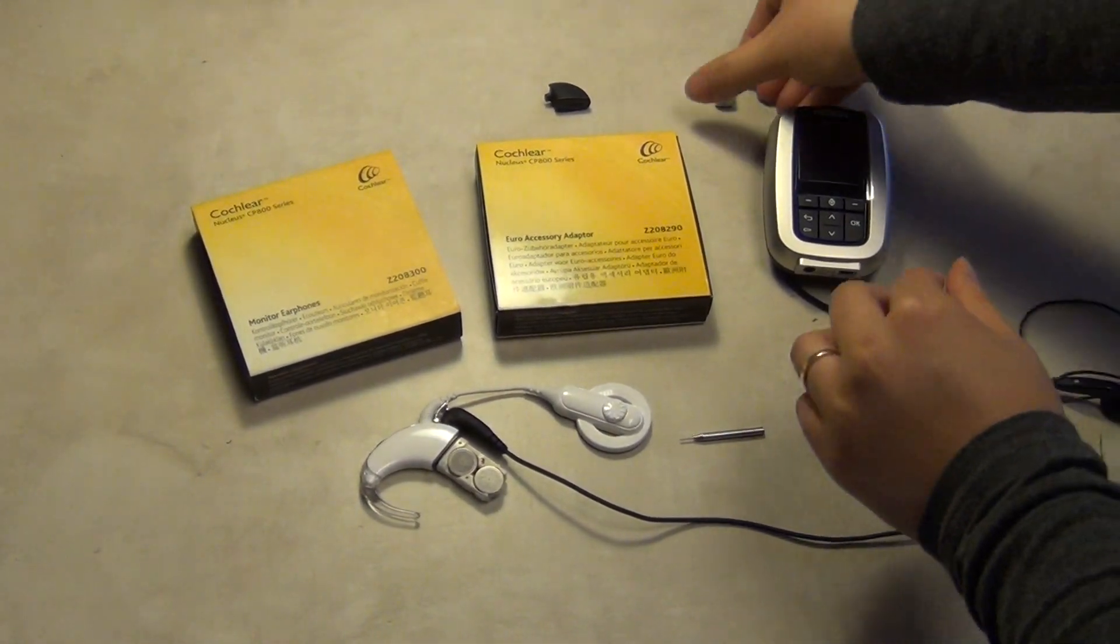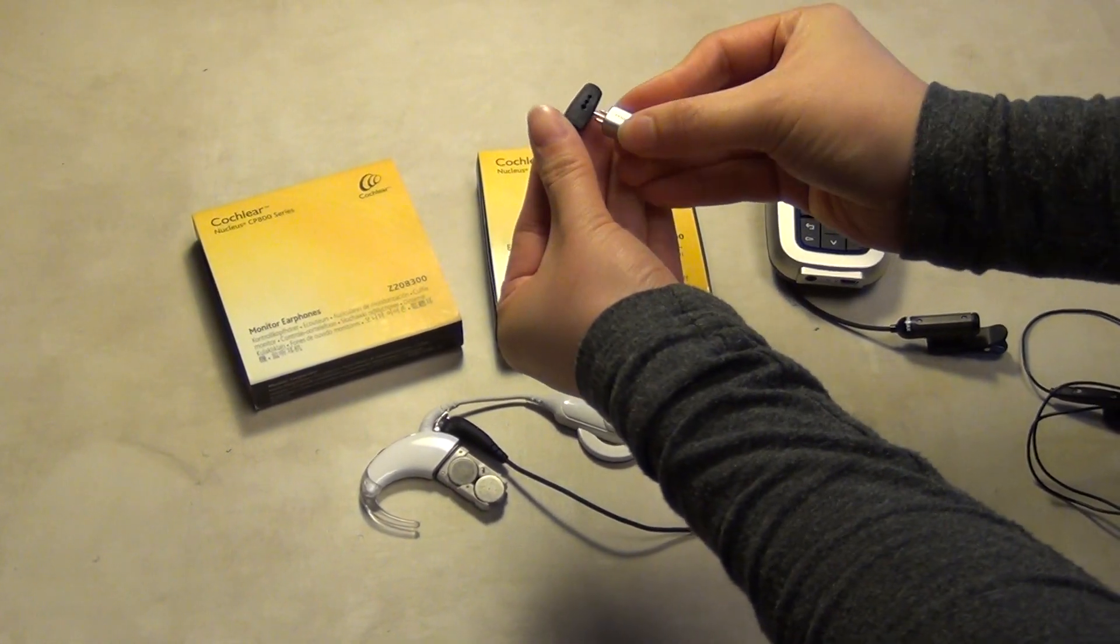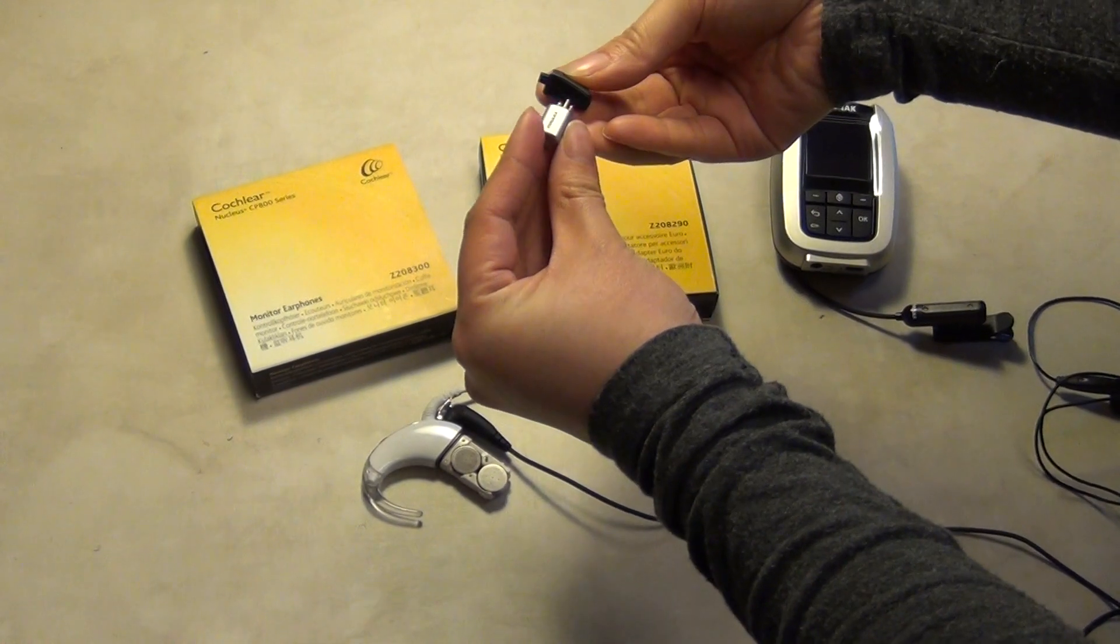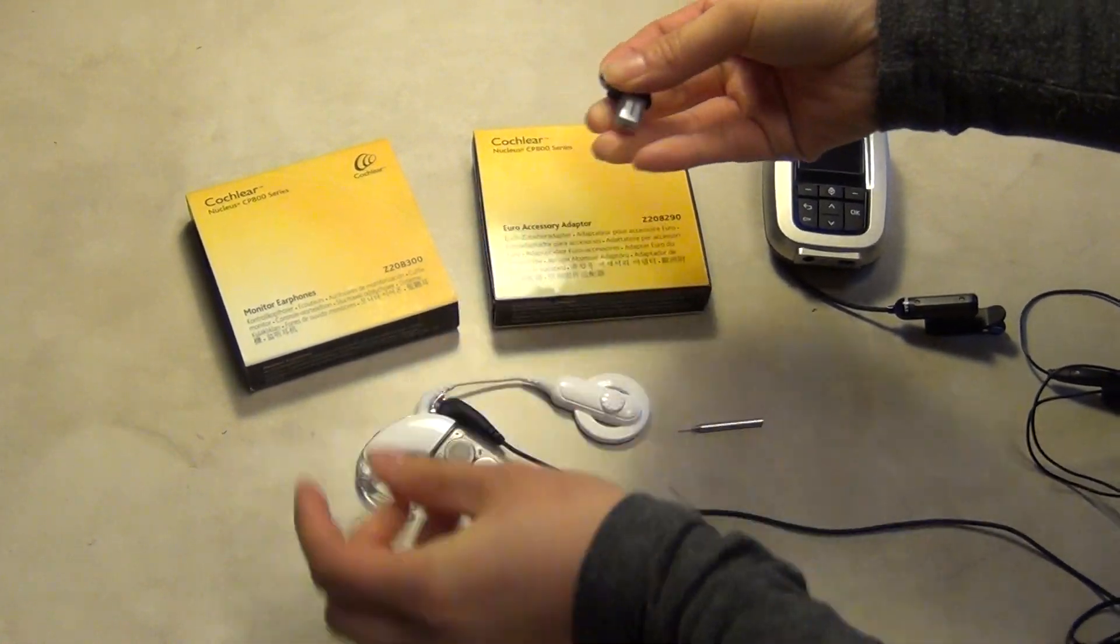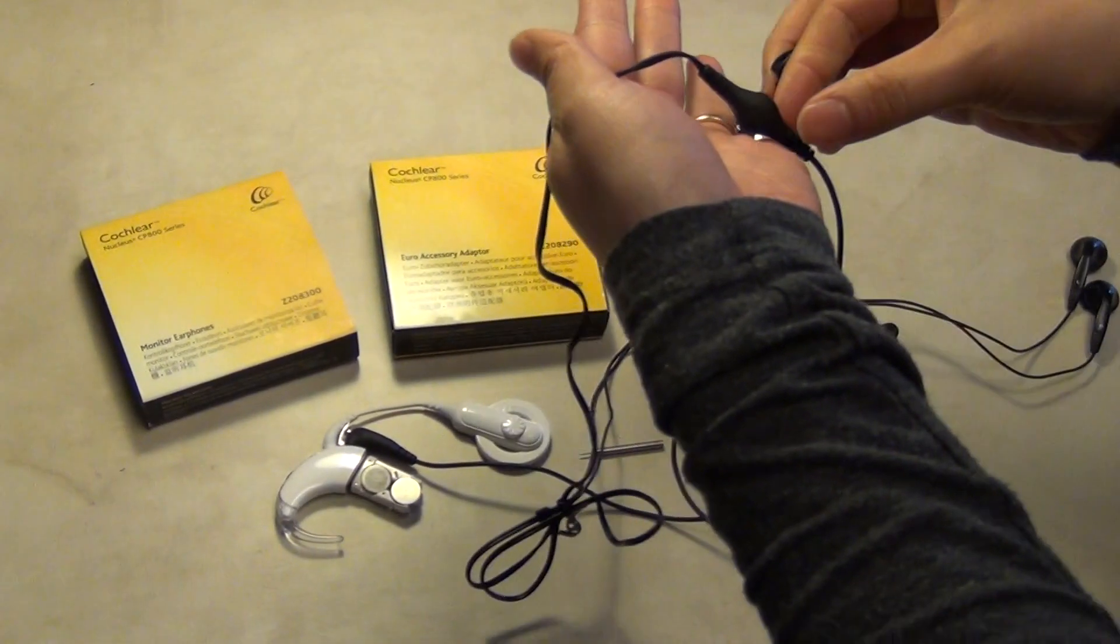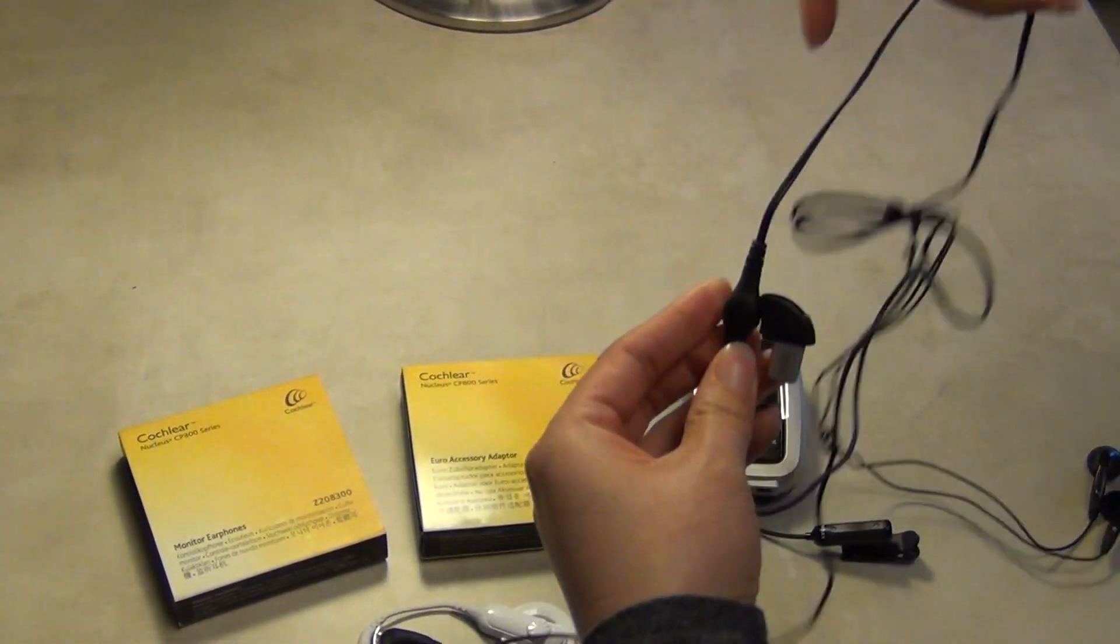Now plug your FM receiver into the adapter. Align the biggest pin with the biggest hole on the adapter. Plug this into the middle bulb socket in the middle of the earphones.